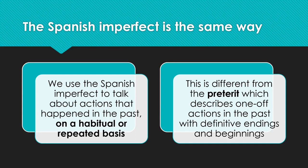This is different from the preterite, which describes one-off actions in the past with definitive endings and beginnings. Even though obviously I'm not a child anymore, it's kind of hard to pinpoint exactly what day I stopped being a child. Therefore, it's also hard to pinpoint exactly what day I stopped waking up at 6 a.m. We're just talking about general things — generally, habitually, I woke up at 6 when I was a kid.